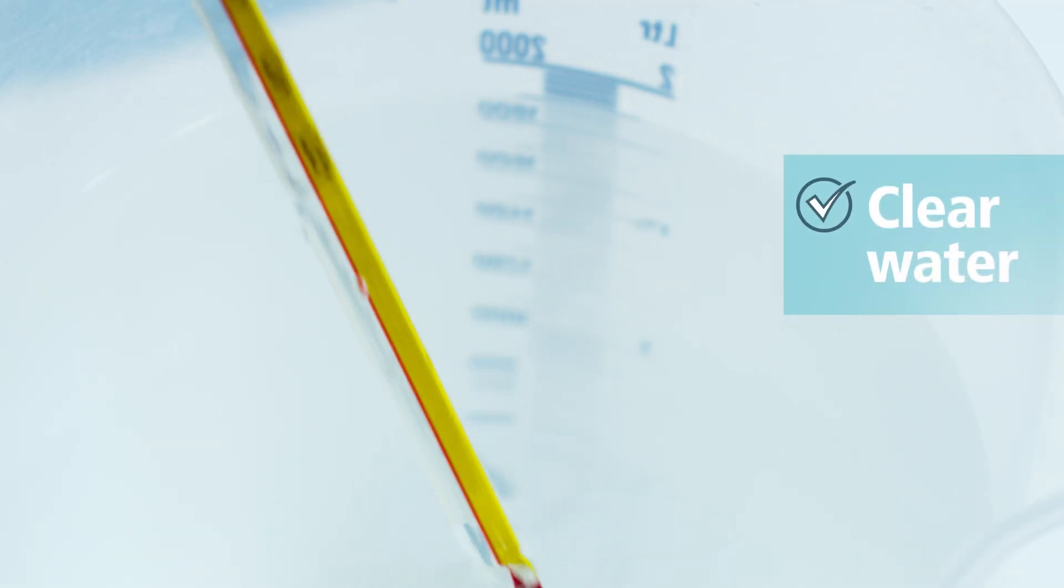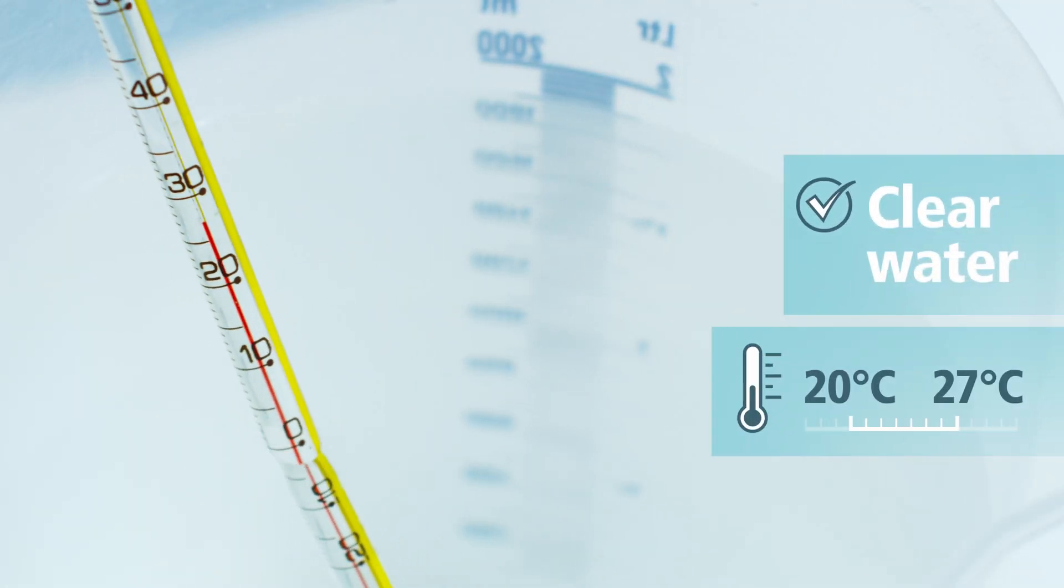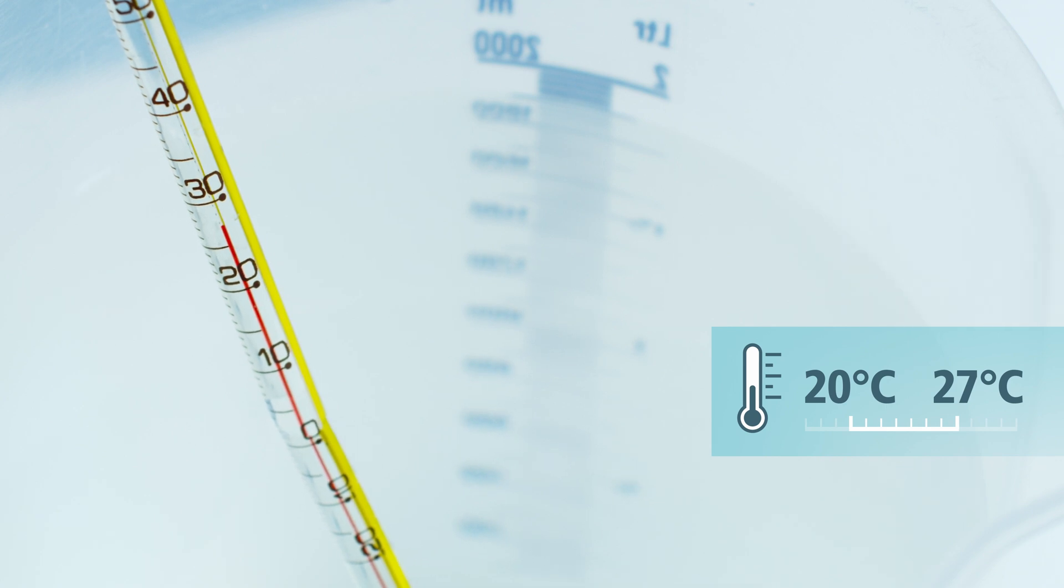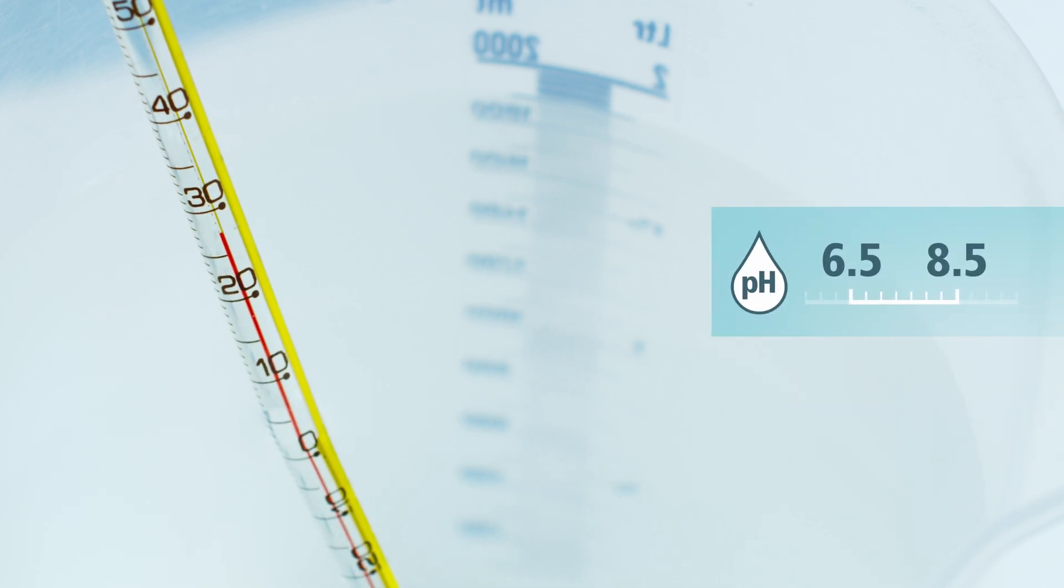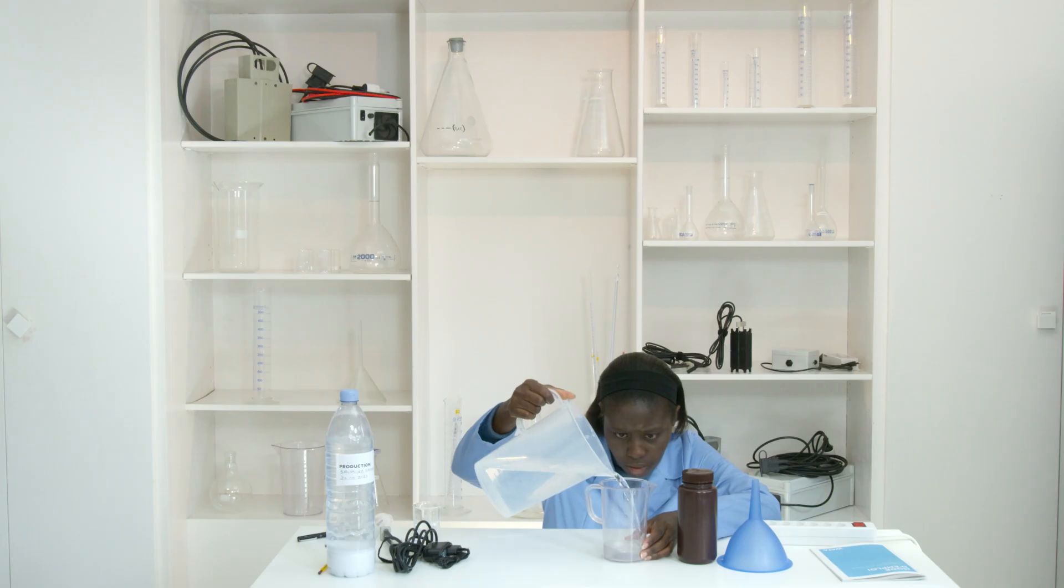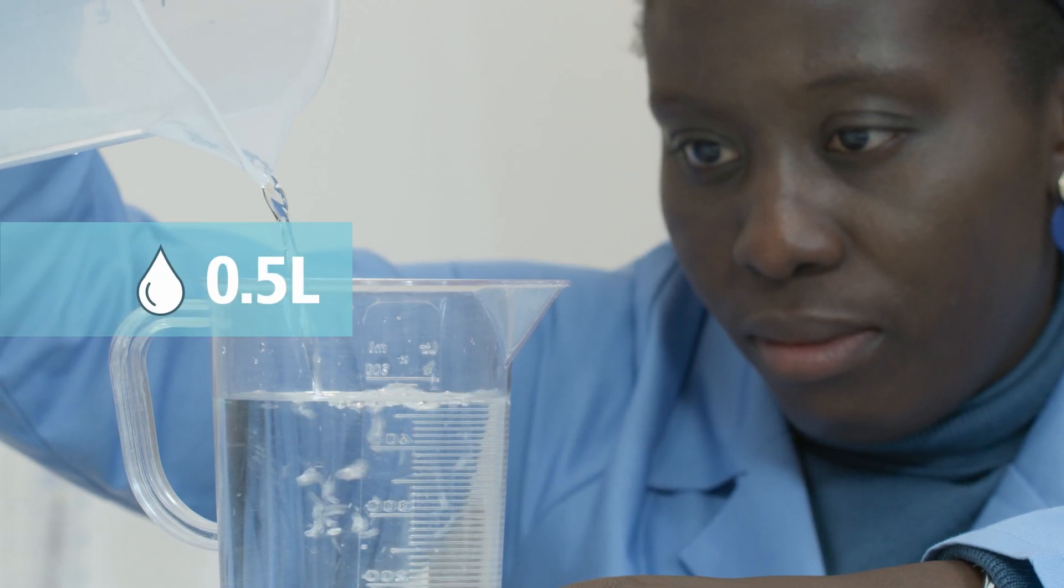You also need clear water between 20 degrees and 27 degrees with a pH between 6.5 and 8.5. Add this water to the beaker until you reach 0.5 liter.